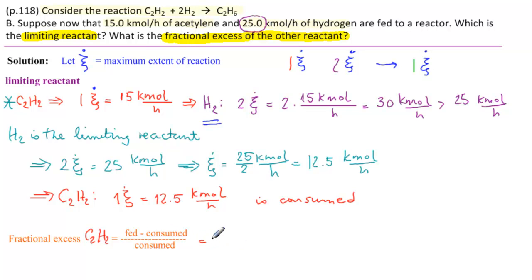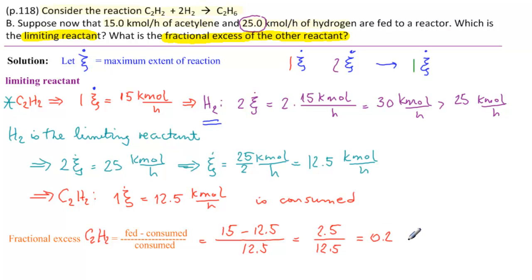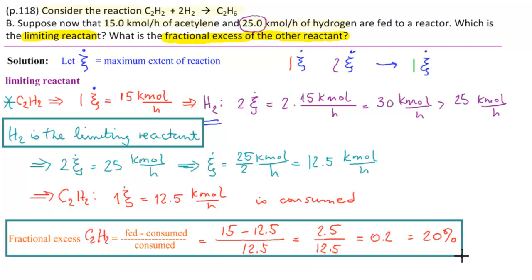And it's fed minus consumed. How much was fed? 15. How much was consumed? 12.5. Divided by 12.5. Everything is kilomoles per hour, so it cancels. So we have 2.5 over 12.5. 2.5 divided by 12.5 should be 0.2, right? 0.2 equals 20%. So our answers are H2 is the limiting reactant, and the fractional excess of acetylene is 20%.